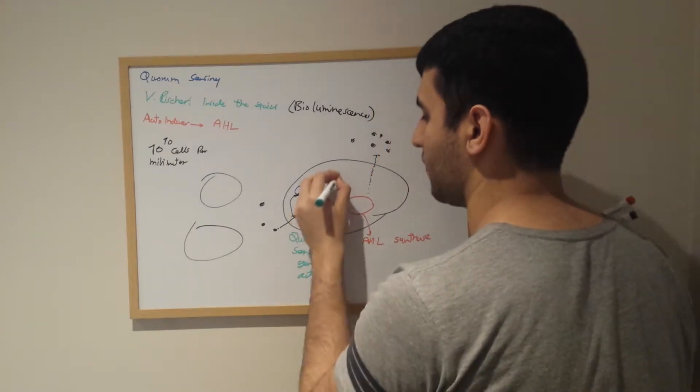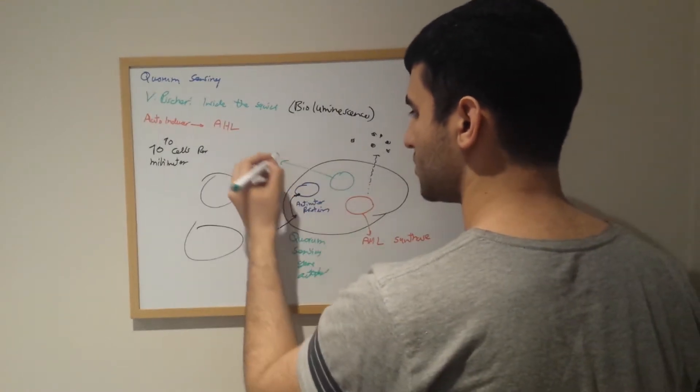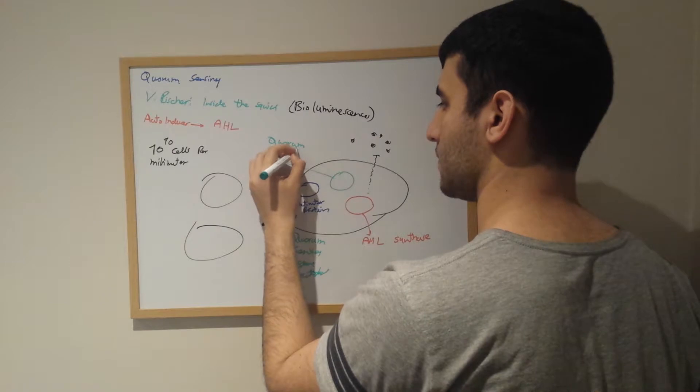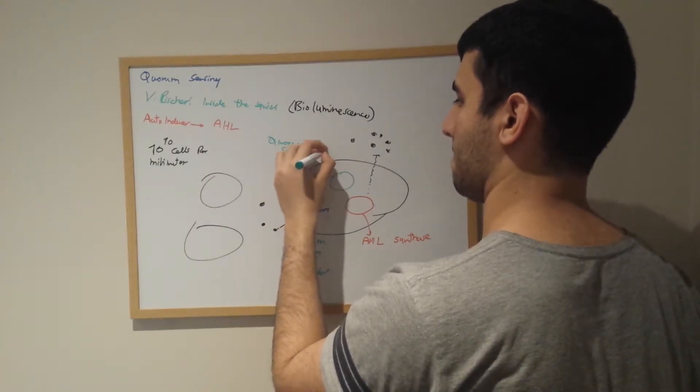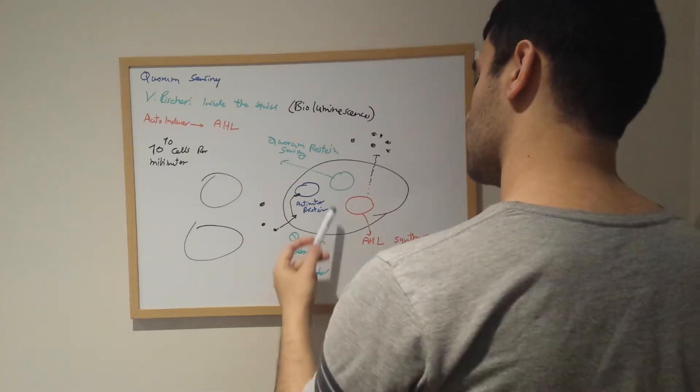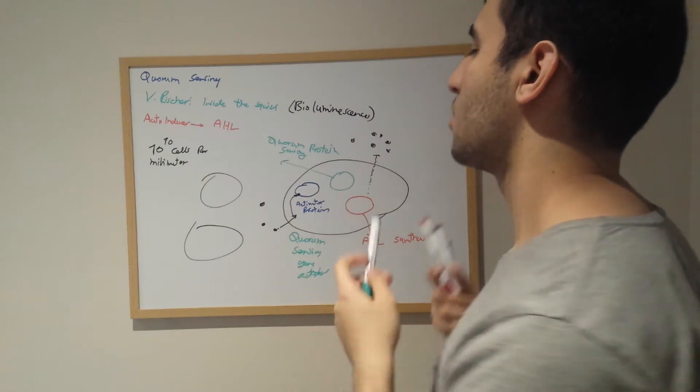Activate it, and hence we have the quorum sensing protein being produced. We see AHL going inside the cell, binding activator protein, and a specific quorum sensing protein is being produced.